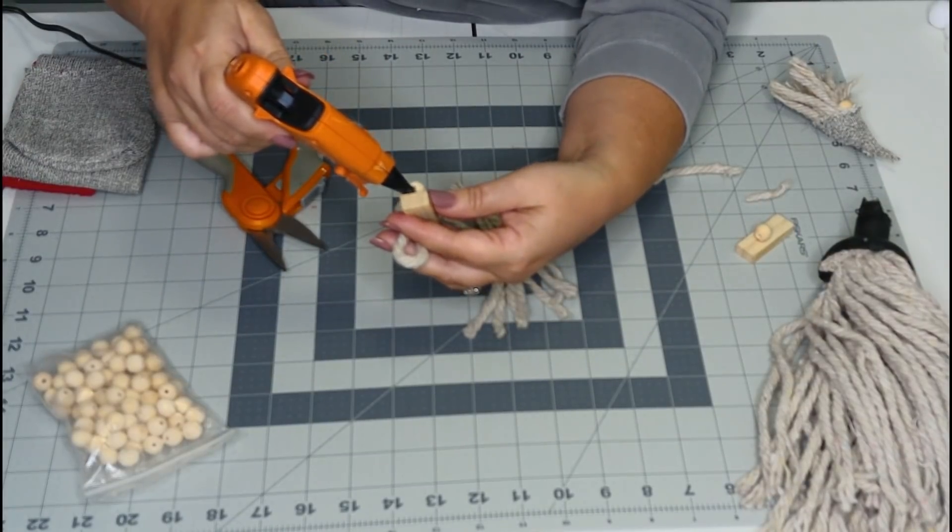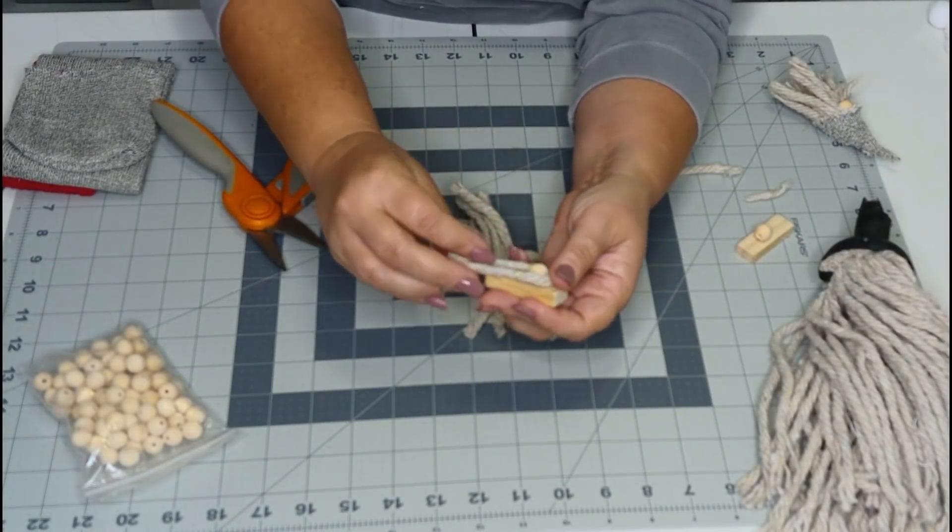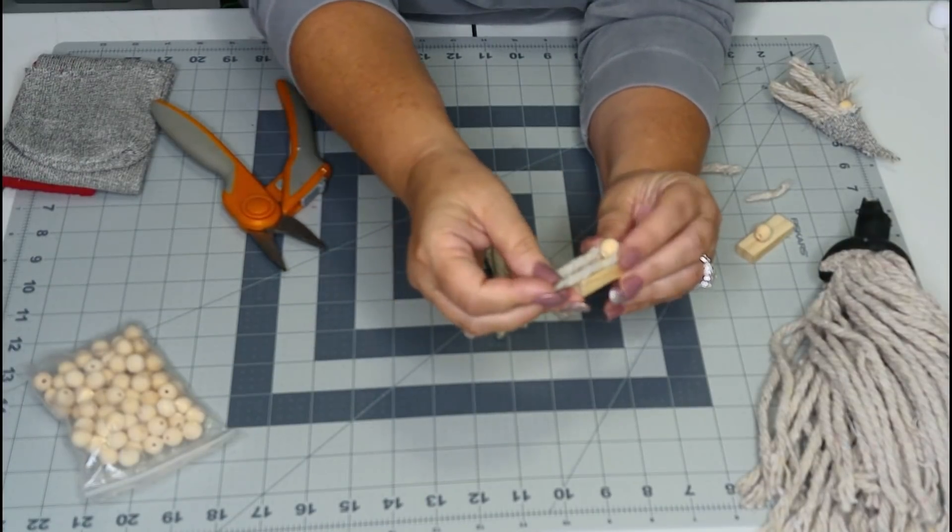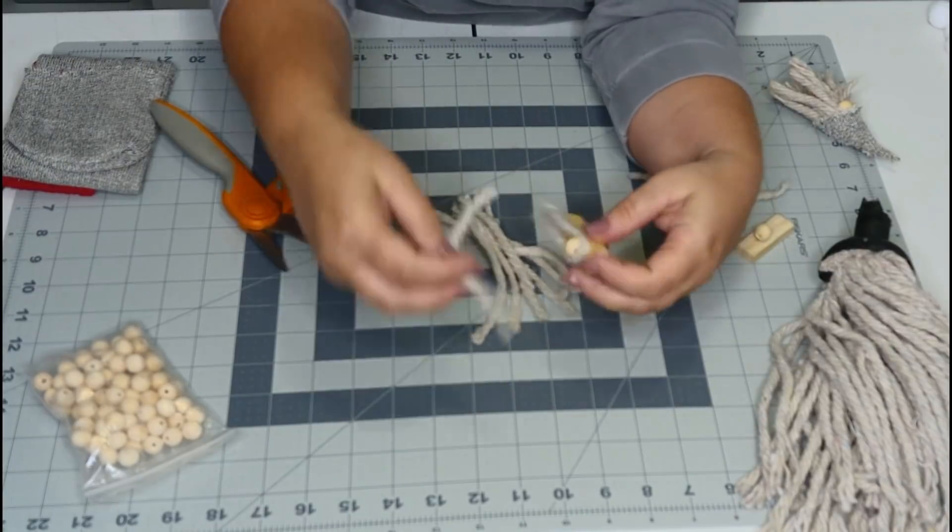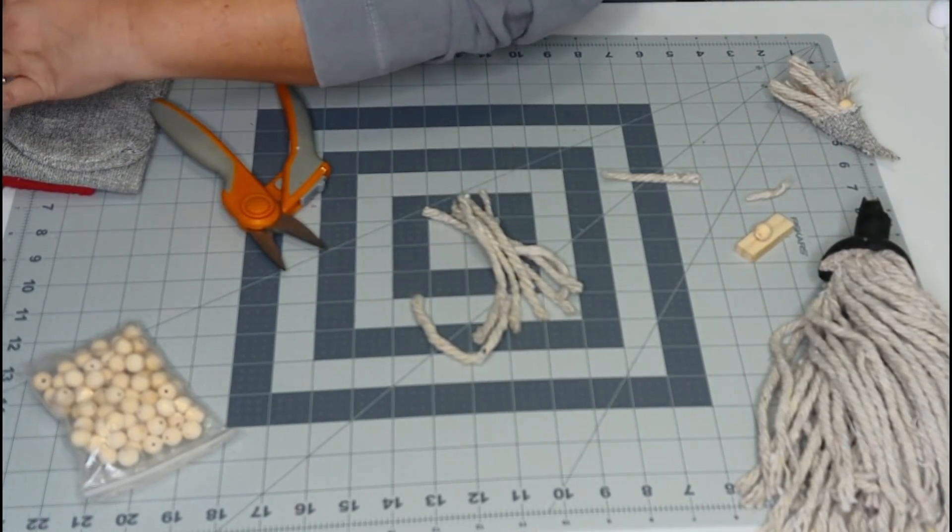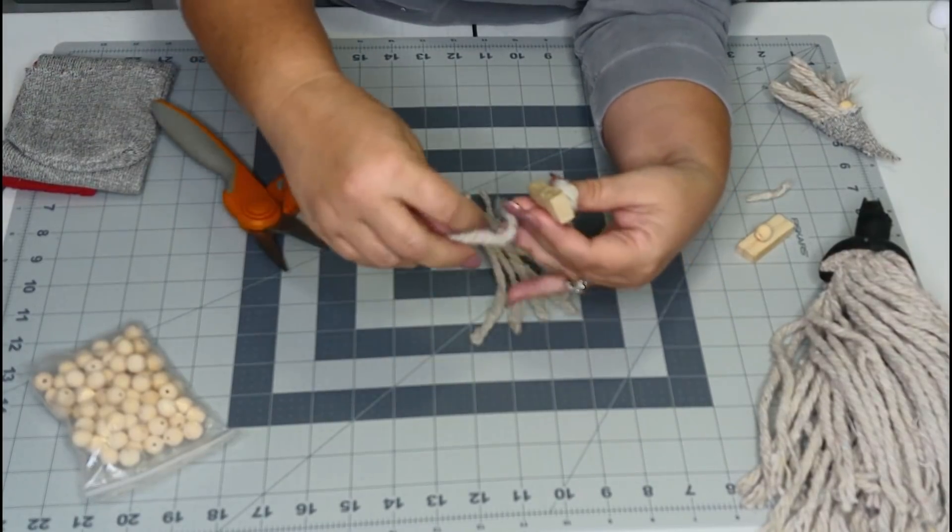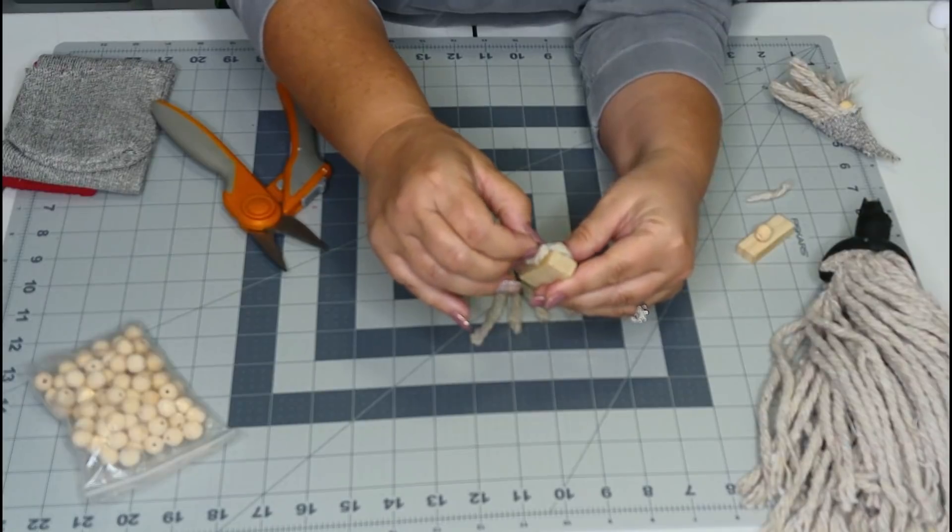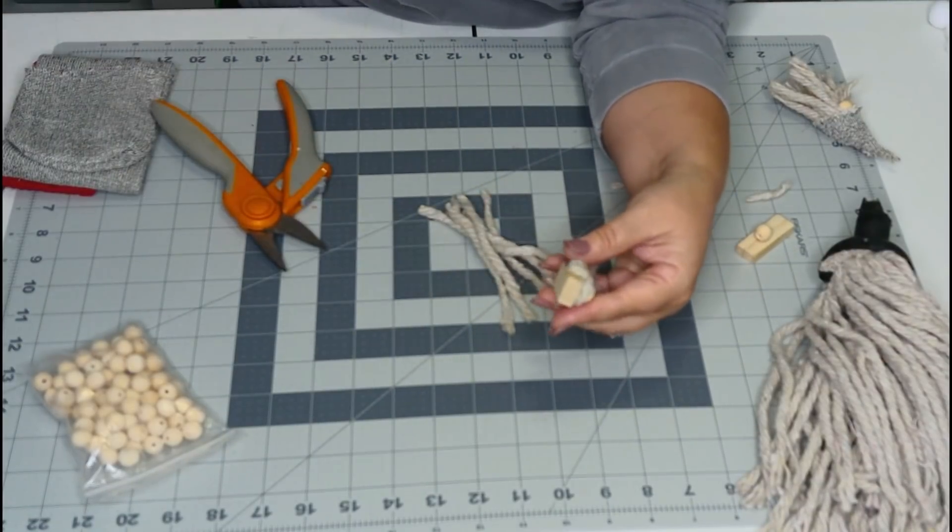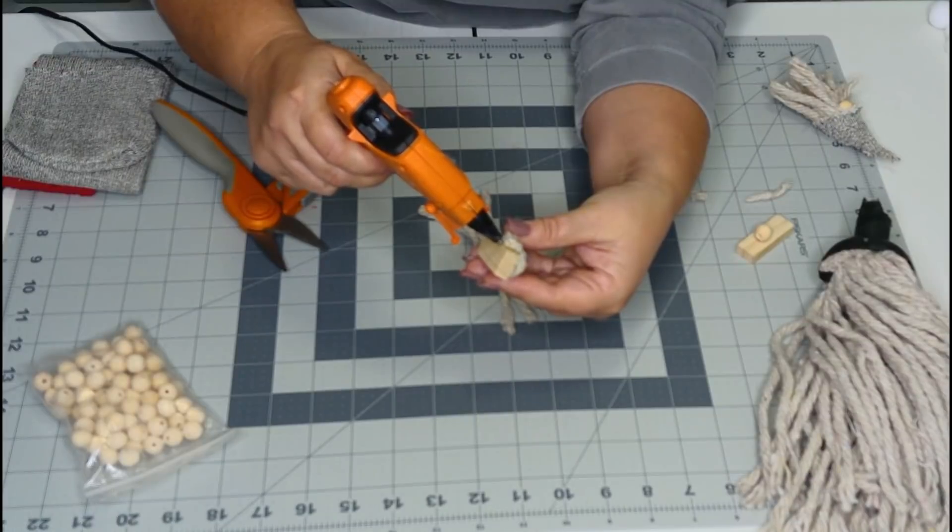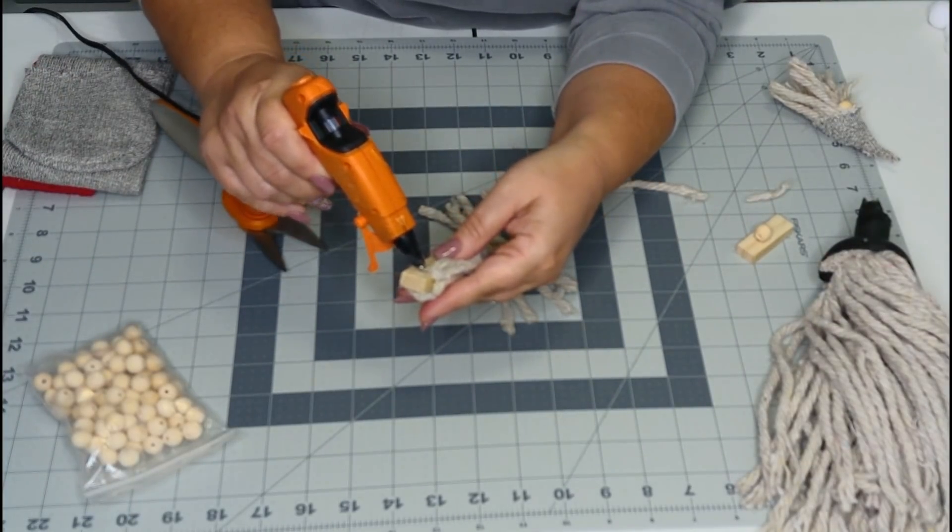We're just going to put a little hot glue on our block and loop our piece of mop over his top. Put a little piece of glue here. Now we'll just take our hot glue and go all the way around our whole Jenga block. This seriously takes no time at all.